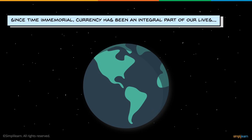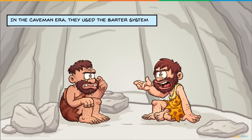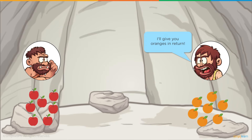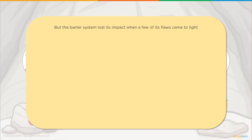Since man evolved, currency has been a very important part of our lives. In the caveman era, they used the barter system, which involves goods and services being exchanged among each other — for example, a caveman exchanging seven apples and getting oranges in return. The barter system fell out of use because it had some glaring flaws.